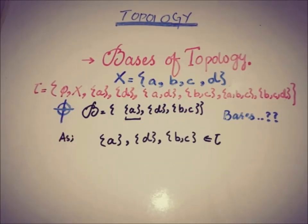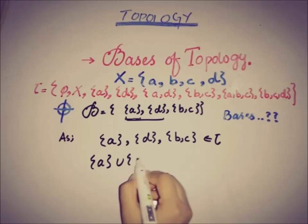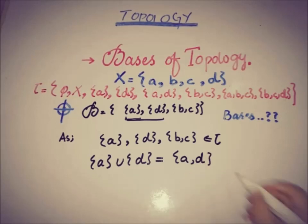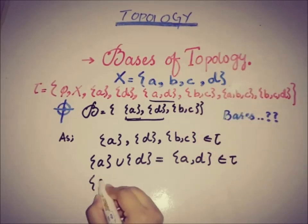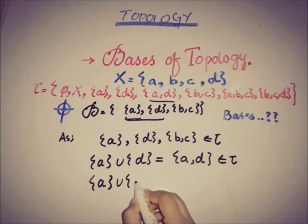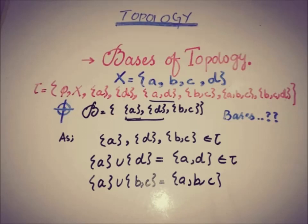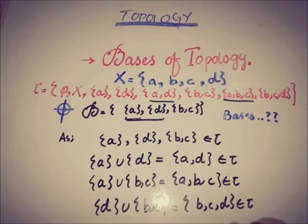For the remaining elements: if we take the union of {a} and {d}, it equals {a, d}, which is an open set. If we take the union of {a} and {b, c}, it gives {a, b, c}, which is also an open set. And if we take the union of {d} and {b, c}, it gives {b, c, d}, which is also an element of the topology, or an open set.